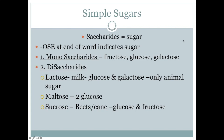Simple sugars are the monosaccharides and disaccharides. The suffix '-ose' indicates a sugar. Monosaccharides — single molecule sugars — include fructose, glucose, and galactose. The disaccharides are: lactose, from milk, which is a glucose and galactose molecule connected together; maltose, which is two glucose molecules hooked together; and sucrose, which is table sugar extracted from beets and sugarcane — a glucose and fructose molecule bonded together.